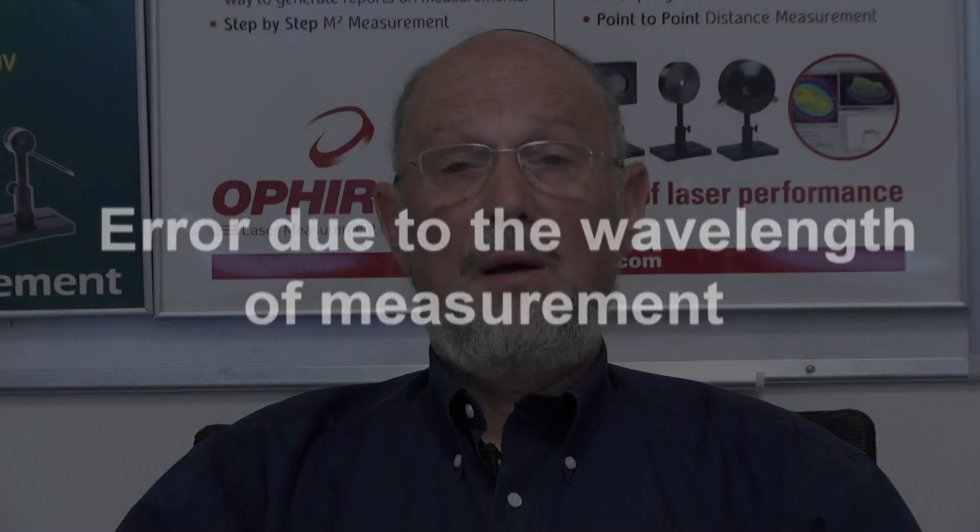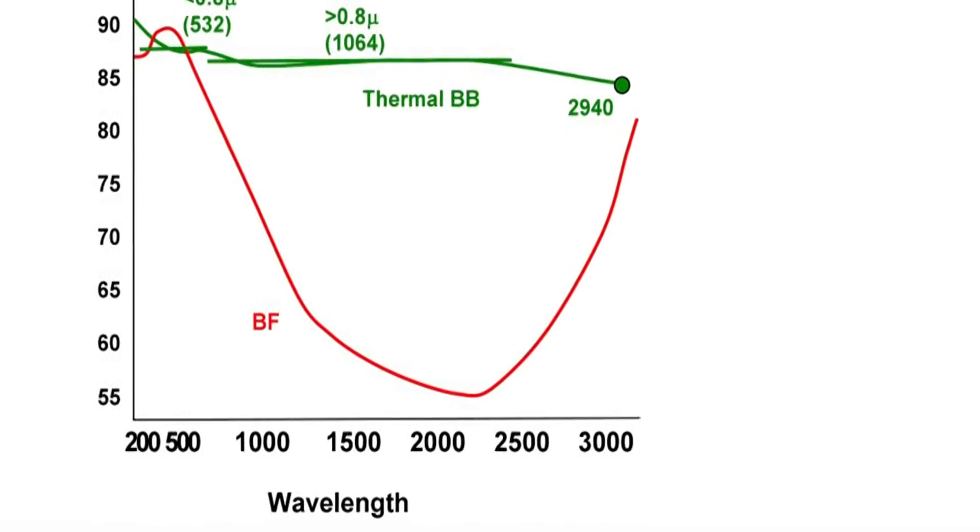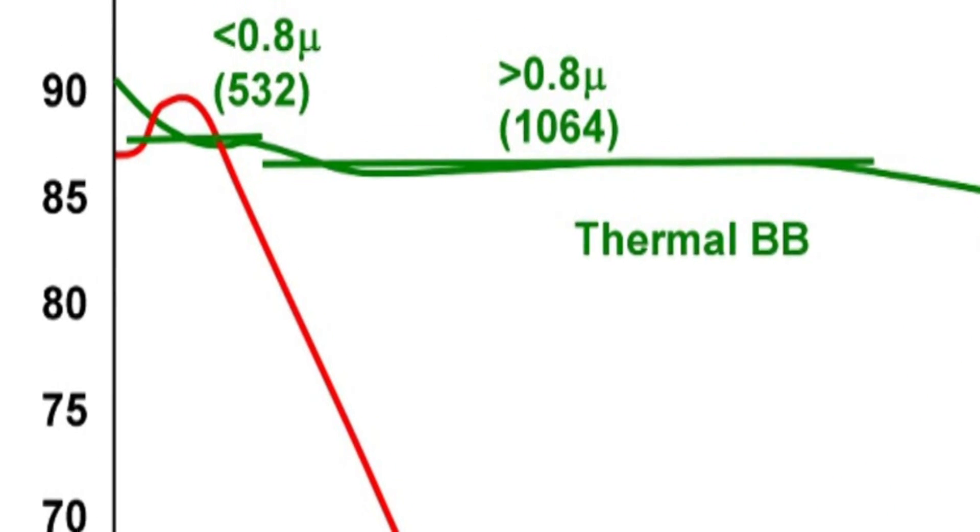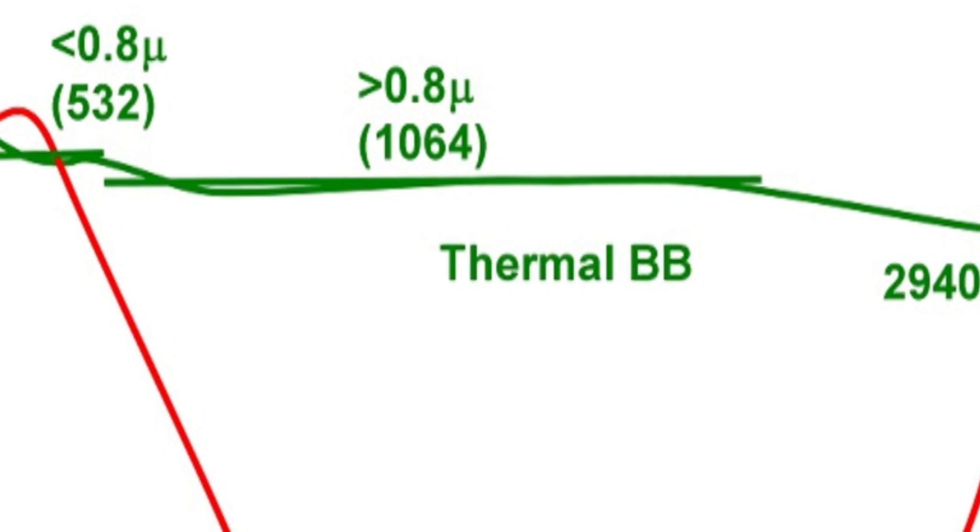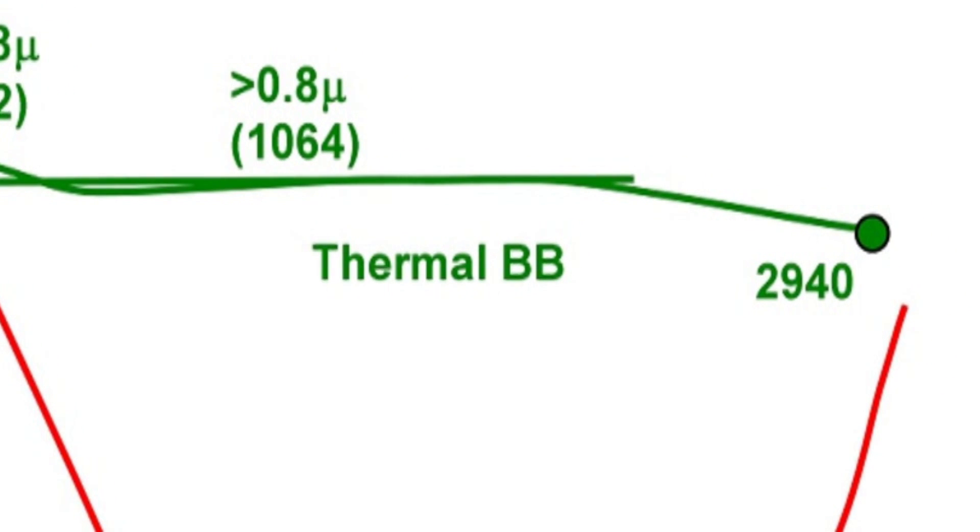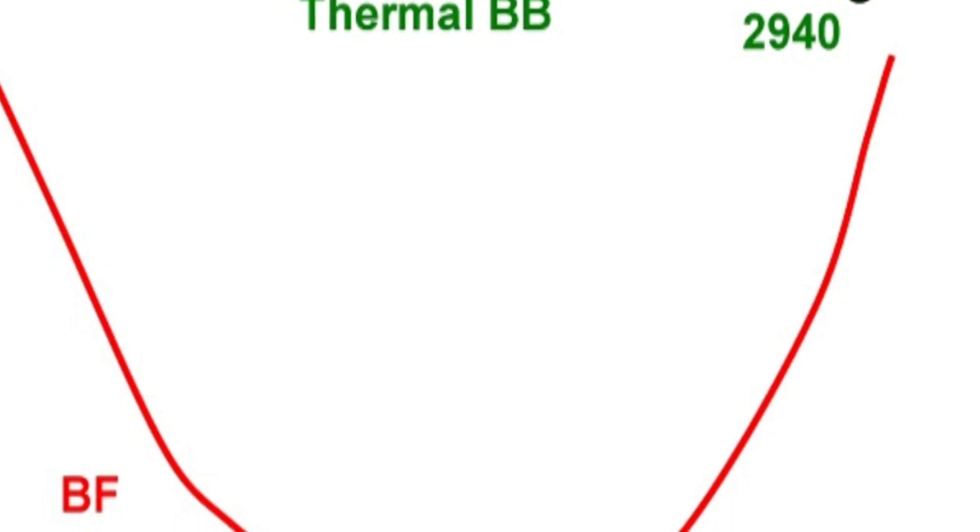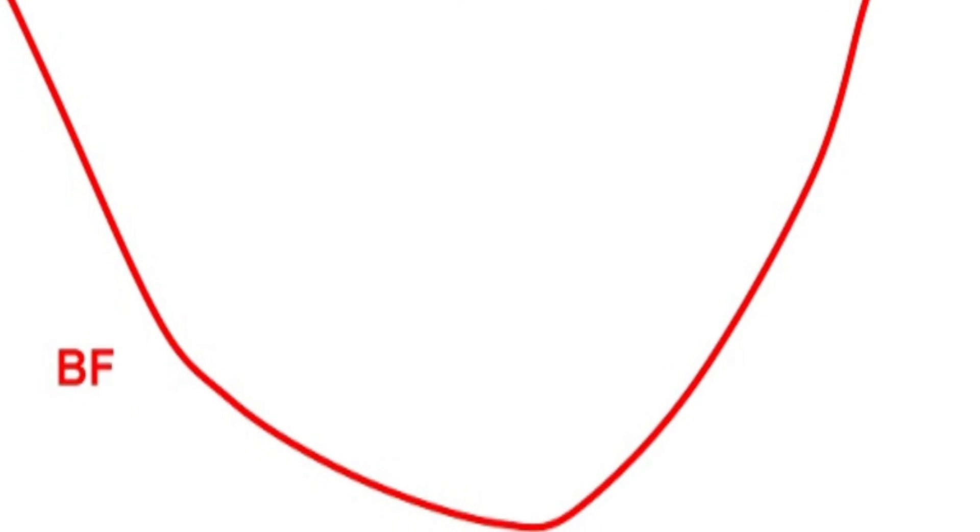Now there's another source of error we have to take into account for all of our sensors and that is error due to the wavelength of measurement. Ophir sensors absorb different amounts at different wavelengths. If we look at this graph here, we have two types of absorbers on our sensors. We have absorbers such as the green graph here that are flat with wavelength and change very little at different wavelengths. And we have absorbers that change a lot with different wavelengths such as this BF curve here with the red curve.